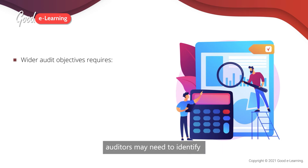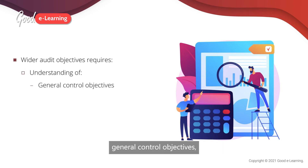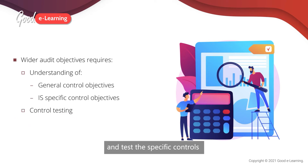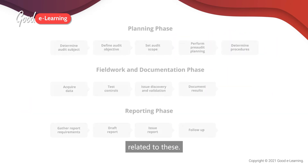To achieve these wider audit objectives, auditors may need to identify general control objectives, analyze how these break down into IS-specific control objectives, and test the specific controls related to these.